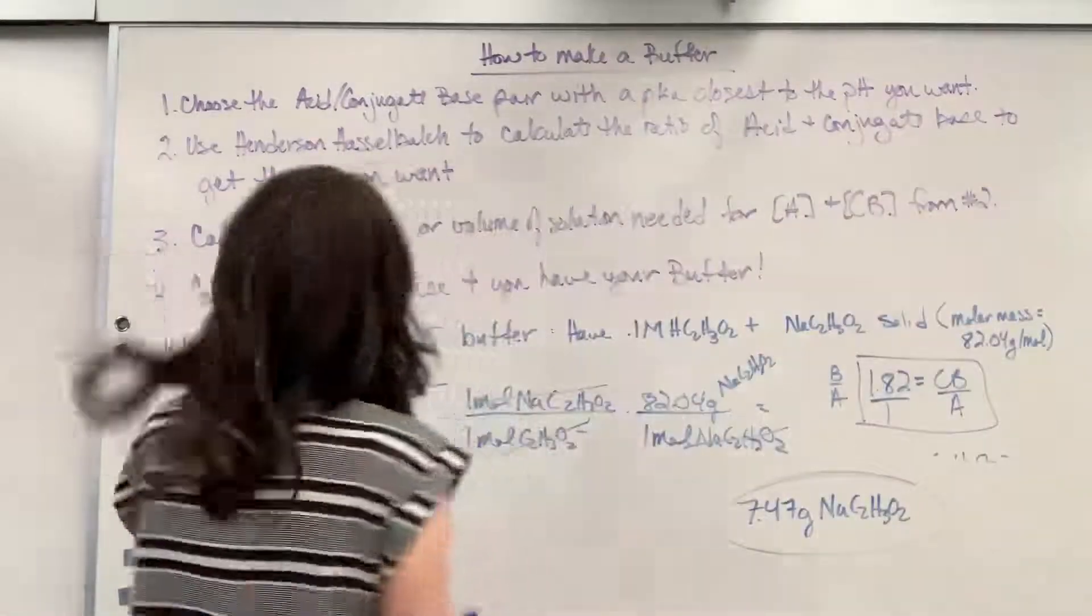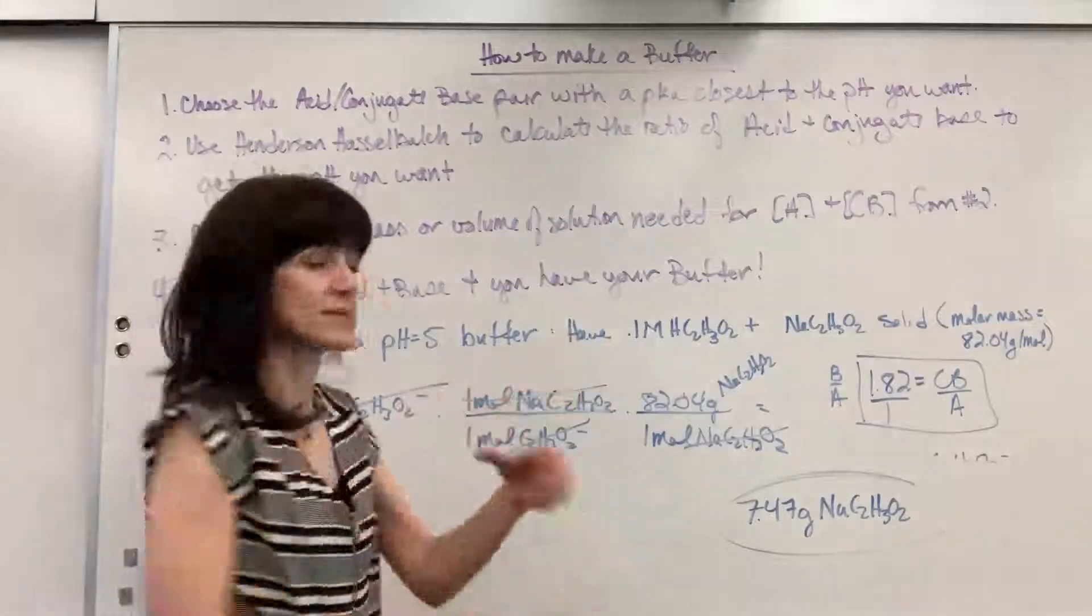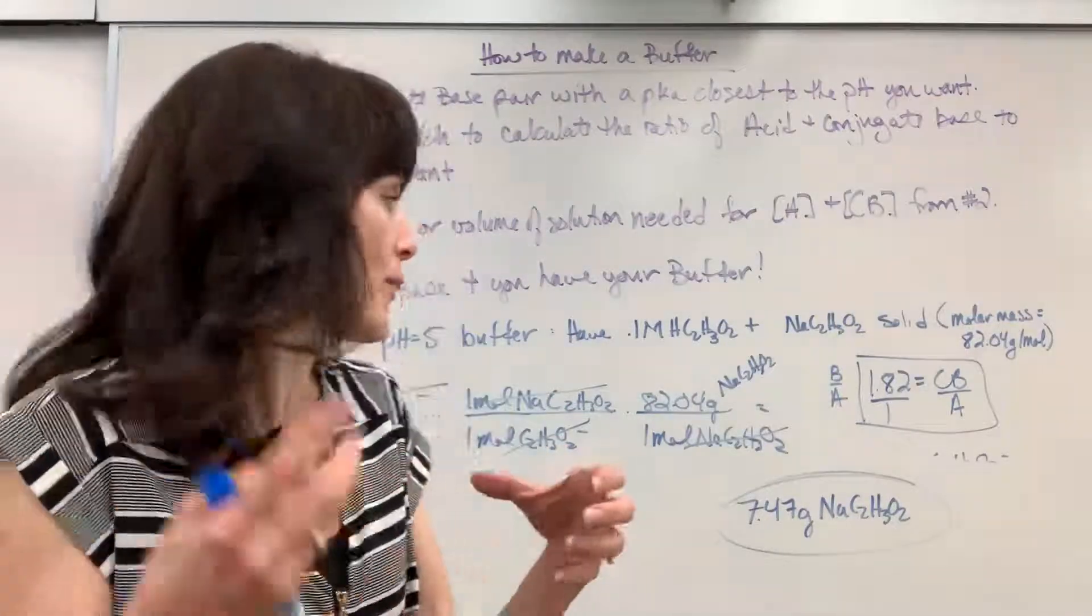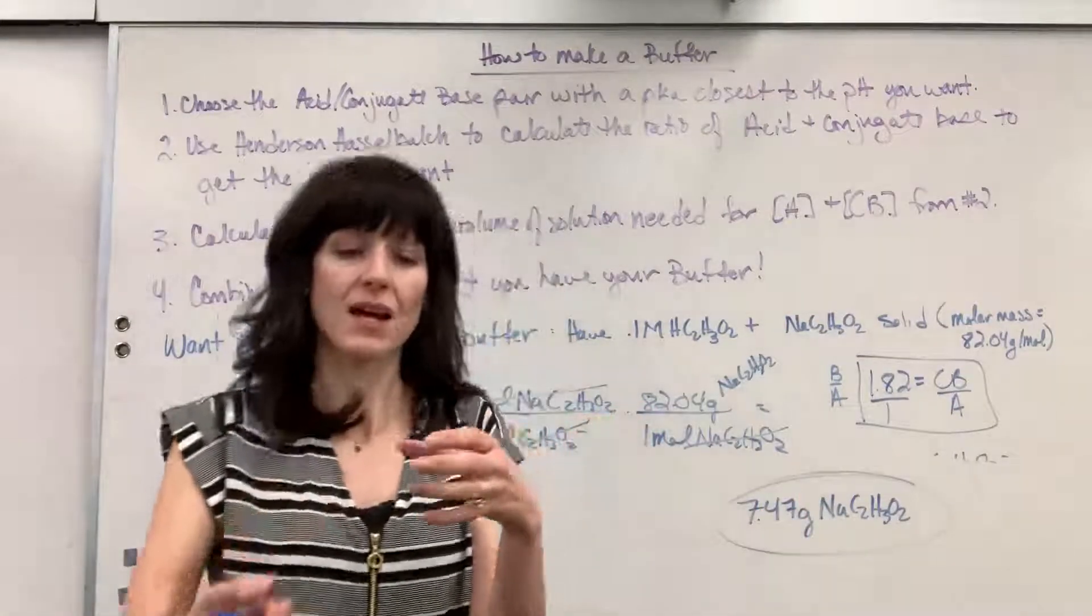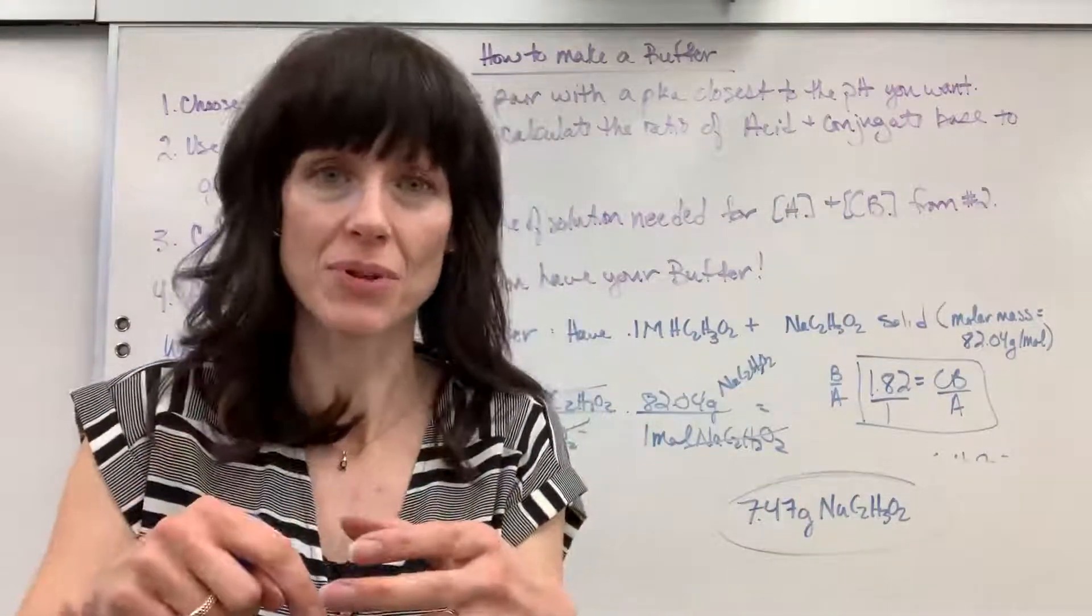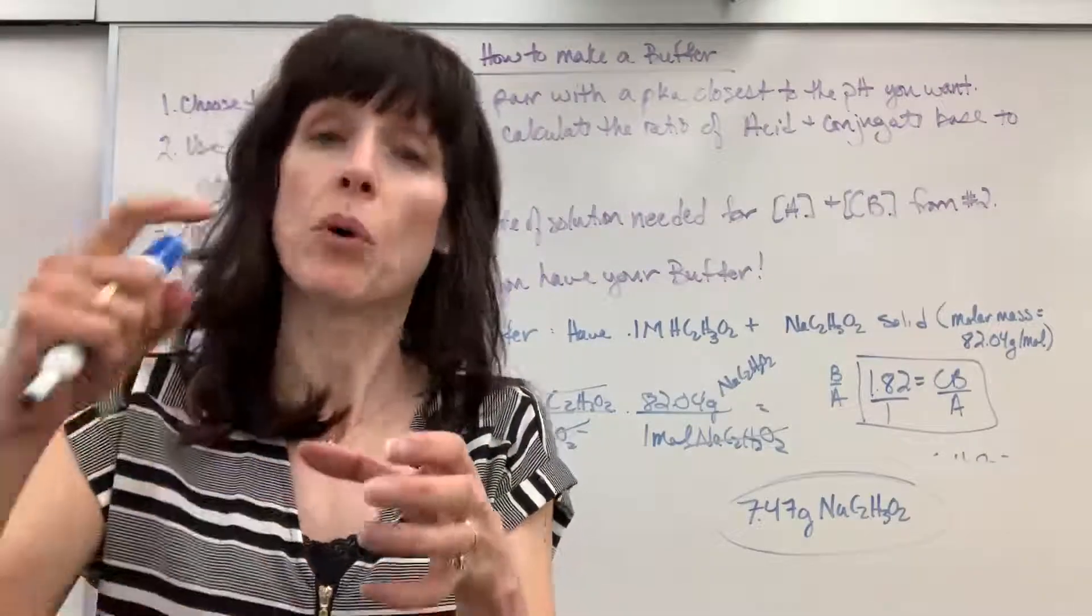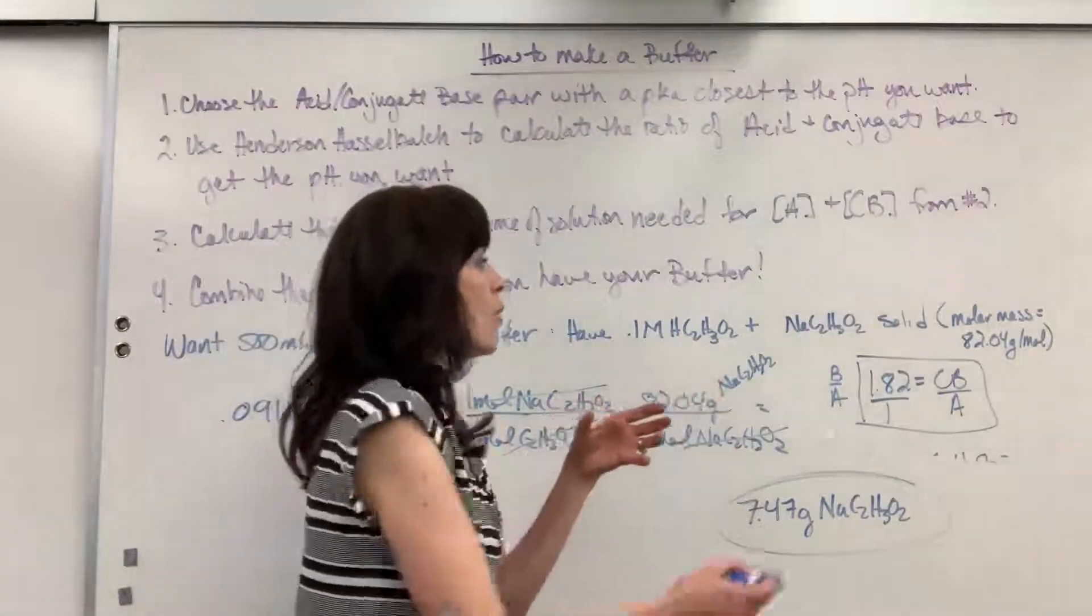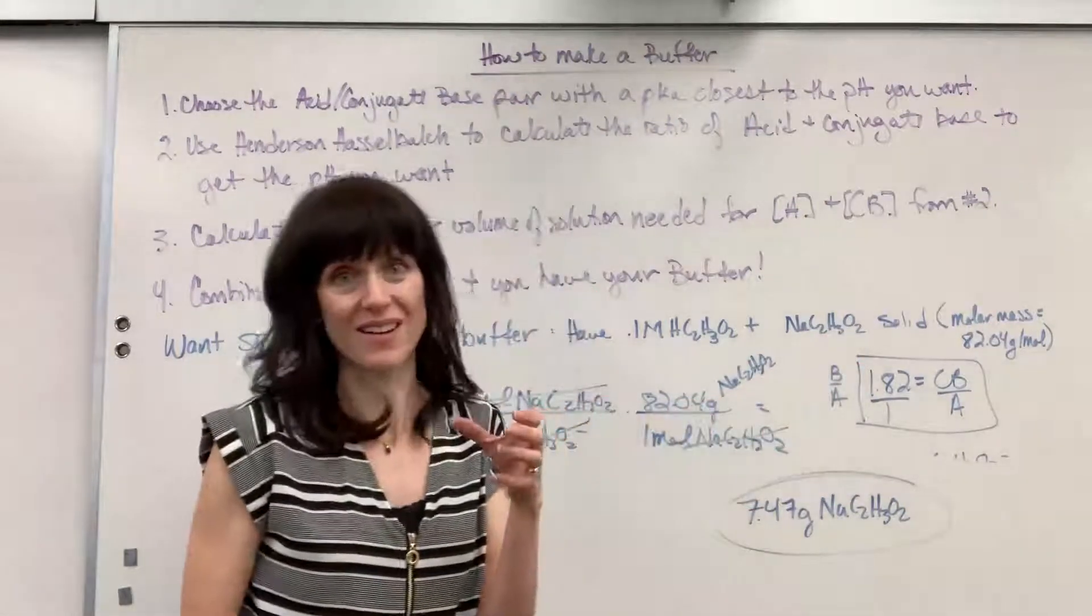We're going to take 500 mils of a 0.1 molar acetic acid that has 0.05 moles floating in it. I'm going to weigh out 7.47 grams of sodium acetate, pour that in here, stir it up, and that just made a buffer.